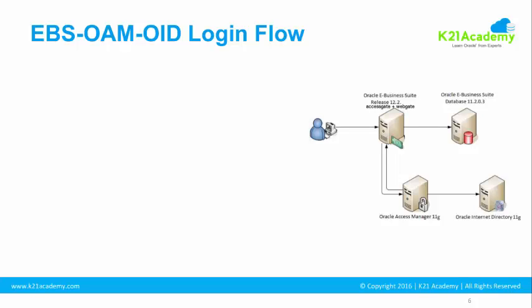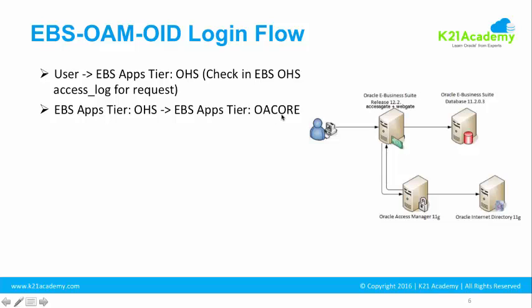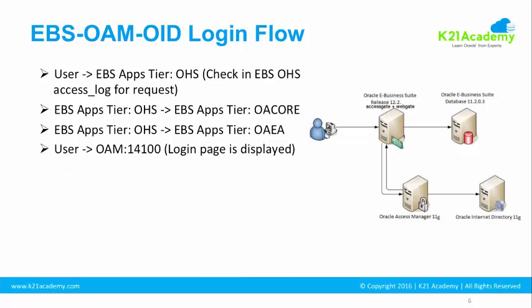We are in module 11 of EBS OAM integration, looking at how to troubleshoot and enable debug for login request problems in Oracle E-Business Suite with Oracle Access Manager. In the previous lesson we saw that a user connects to the EBS URL, the request hits OHS, goes to OA core for oa_html, and because of the two profile options set for OAM integration, the request is forwarded to the EBS Access Gate managed server (OAEA), where the URL is protected by Oracle Access Manager — so the user sees an OAM login page.